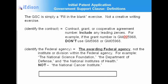Identify the federal agency — this is the awarding federal agency, not the institute or division within that agency. For example, we wouldn't use the National Cancer Institute; we would use the National Institutes of Health. It may sound simple, but it can get confusing. Here's a tip if you're unsure which agency is your awarding agency: just look at your notice of award.